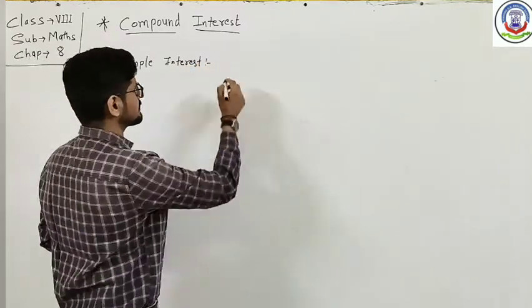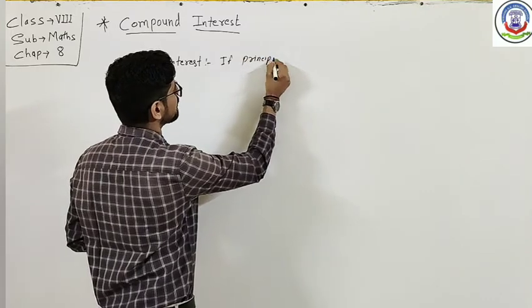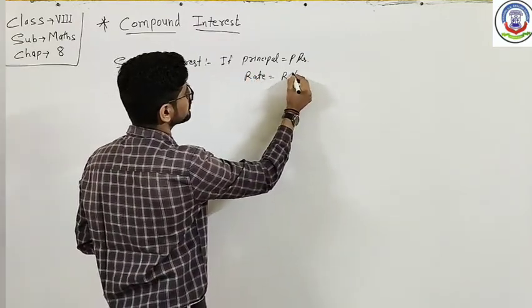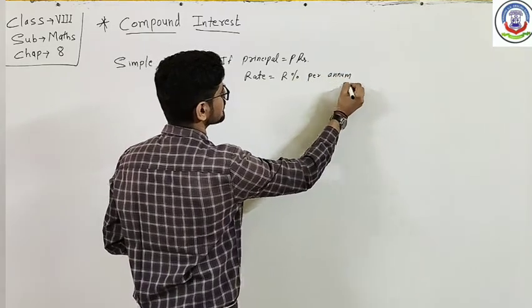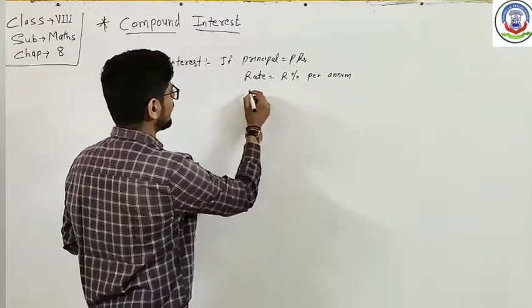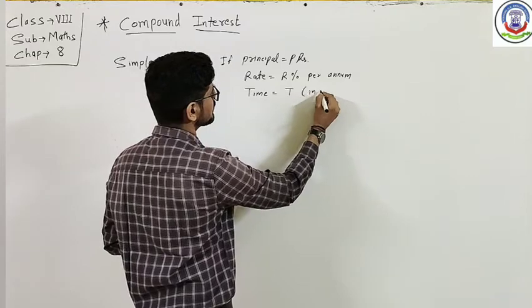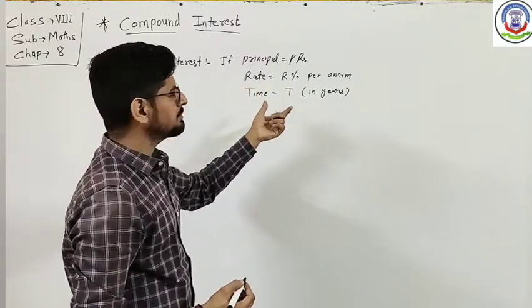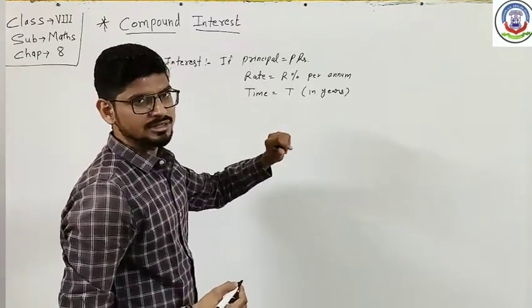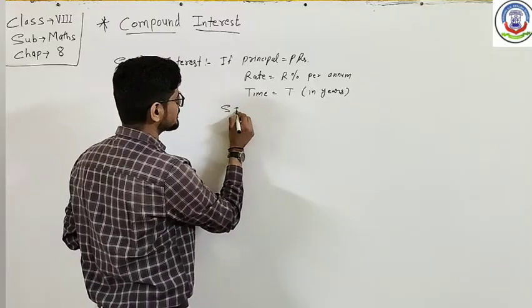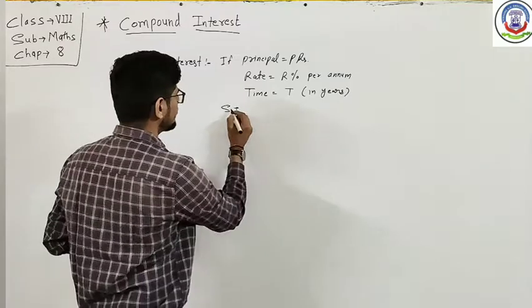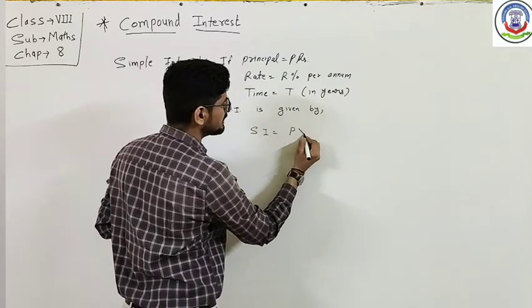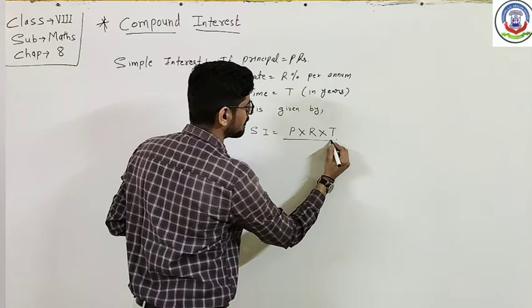अगर आपका Principal amount P rupees है, and rate is equal to R% per annum, means per year, and time is equal to T in years — यह मैं आपको general formula बता रहा हूँ। Principal P rupees, rate of interest R% per annum, time period T in years, then Simple Interest is given by: SI = P × R × T ÷ 100.